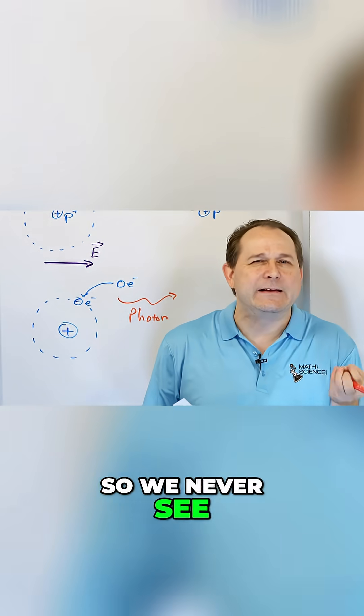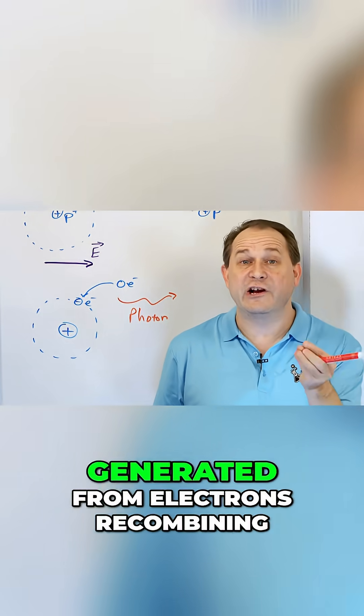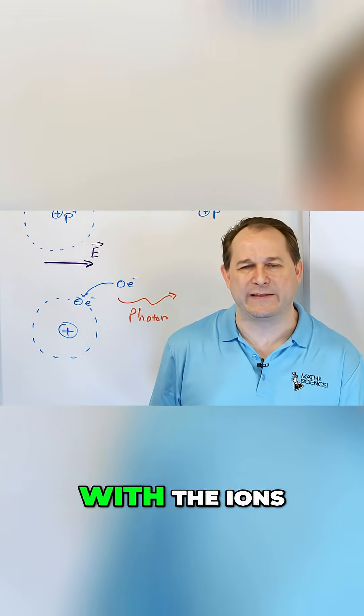So we never see the plasma itself. All we see are the photons that are generated from electrons recombining with the ions.